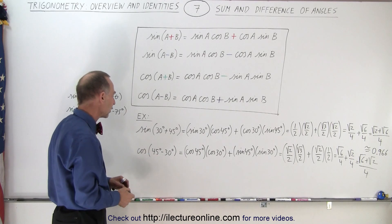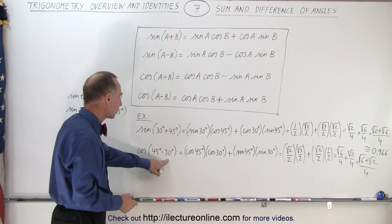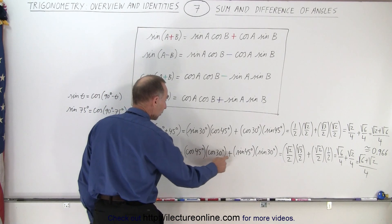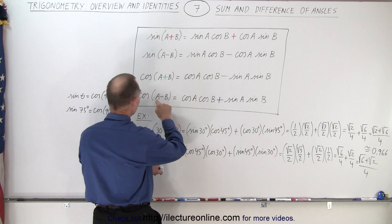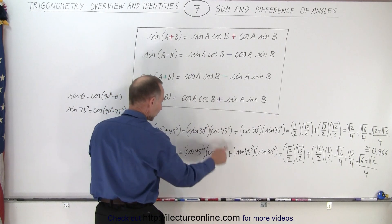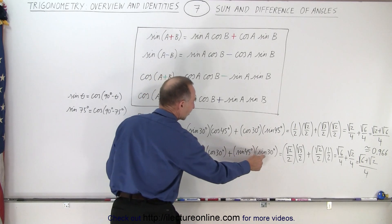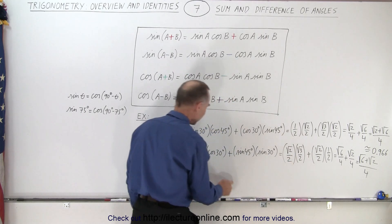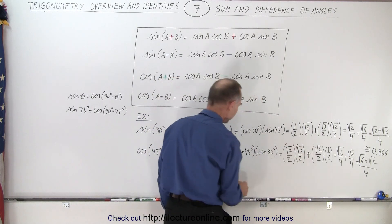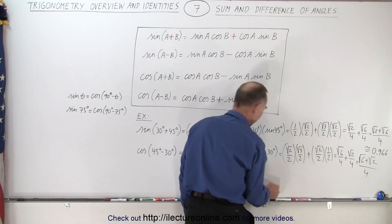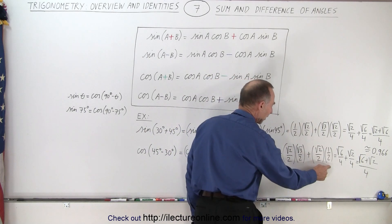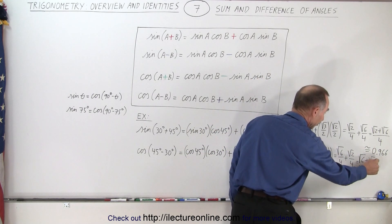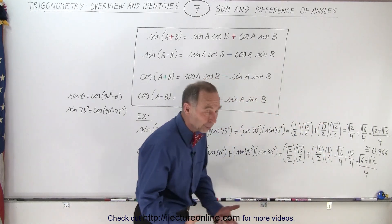Now for the cosine of 45 degrees minus 30 degrees, which is 15 degrees. We get cosine of the first angle times cosine of the second angle, plus the sine of the first angle times the sine of the second angle — because the signs are opposite for cosine, the minus becomes a plus. So cosine of 45° is √2/2, cosine of 30° is √3/2, sine of 45° is √2/2, and sine of 30° is 1/2. Simplifying gives (√6 + √2) / 4, which is again about 0.966.